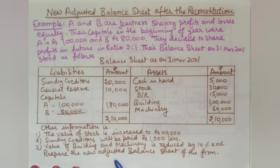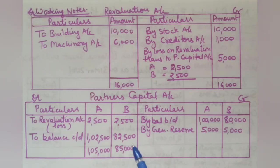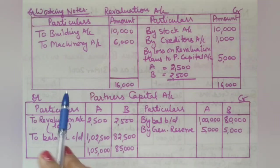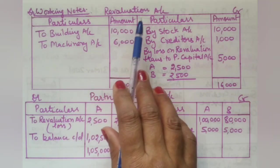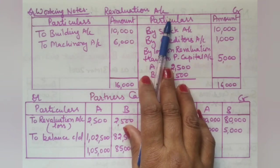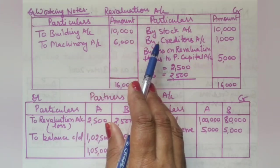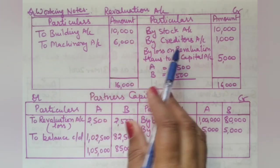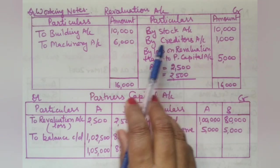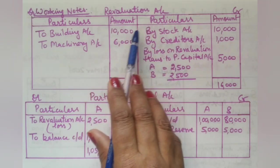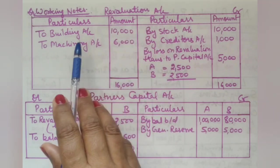We are asked to prepare the new adjusted balance sheet of the firm. Before making the final balance sheet, we will look at the working notes — first the revaluation account — because the profit or loss from revaluation will be distributed to partners, which will change their capital accounts.